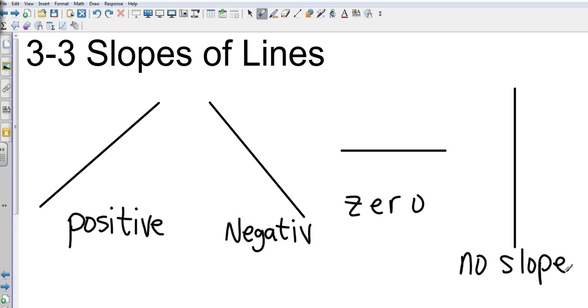So positive would obviously be rising. Negative would be falling. Zero is neither rising nor falling. And obviously no slope is doing neither as well. So four different specific slopes that we're going to take a look at today.